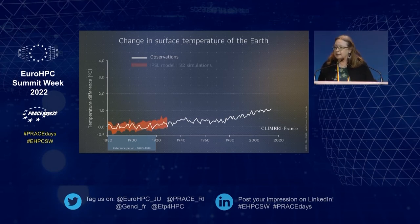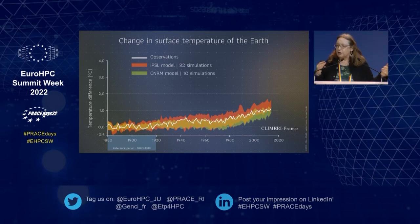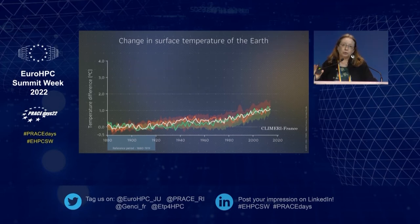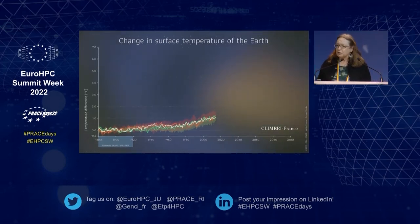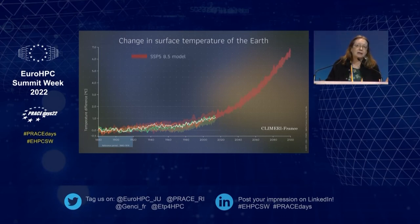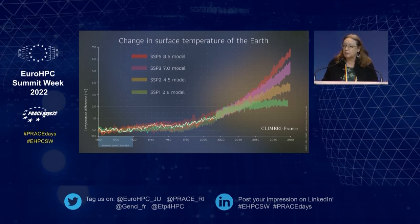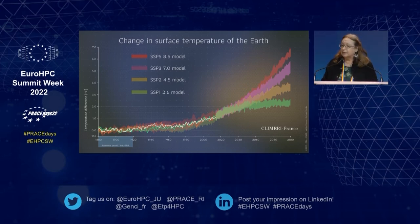Here are observations and a set of simulations with the French models — the IPSL and Meteo France models — with 30 and 10 ensemble members respectively. Interestingly, one of those in each case looks more like the observed, but we can never reproduce exactly what happens. This internal variability is an intrinsic part of the uncertainty and cannot be eliminated — not even by higher resolution. We can only tackle it by doing a set of simulations, not just one.